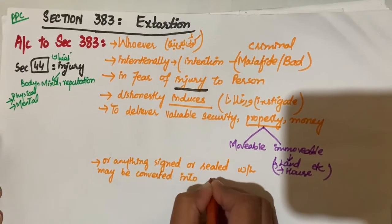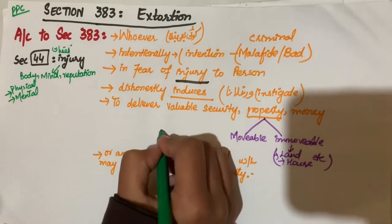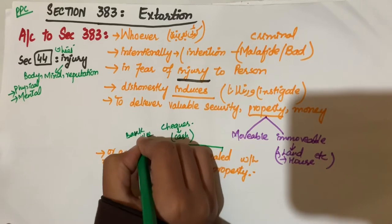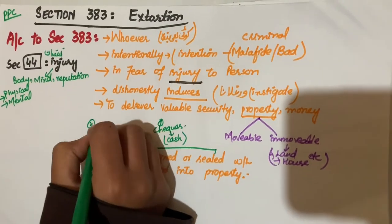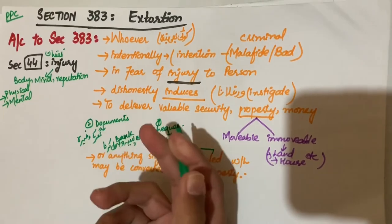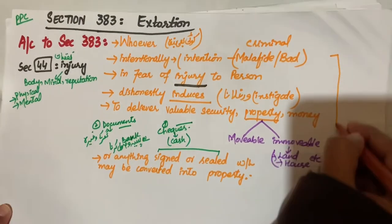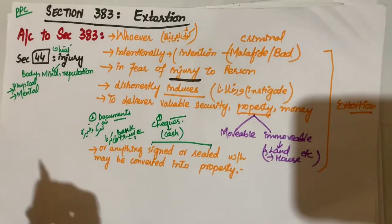Aisi cheez ya aisa document jo humare paas sign hoon mein hoon jinn ko hum valuable security mein convert kar sakte hain. Jaisa ki check ko - hum log agar cash karain aur bank se paise wasul kar lein ya phir ghar ke documents, ghar ke kagzat pe usse dastakhat kara ke, usse sign kara ke hum apne naam kar sakte hain. So in tamam cheezon ko hum yeh kehte hain ki yeh act kya hai - extortion mein aata hai.